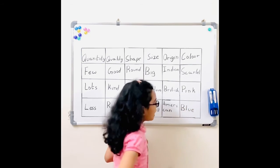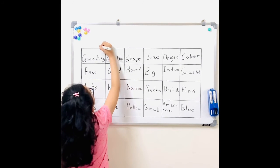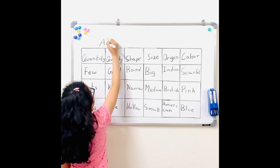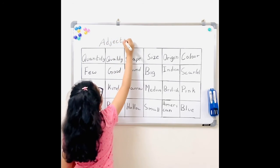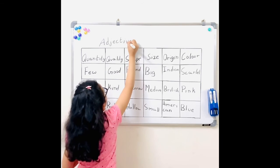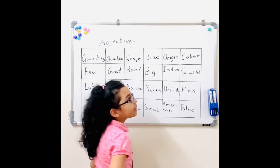So now let's have a quick recap. So an adjective. An adjective describes a noun or noun phrase.